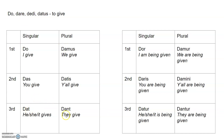Over here on the left side, we have present actives — the first thing you learn. If it ends with O, that means I do it. Ends with S means you do it. T means he, she, or it does it. Mus means we do it. Tis means y'all do it. And NT means they do it. And over here, you can see dat becomes datur — third singular passive — T to TUR.